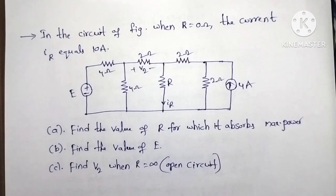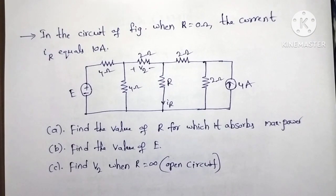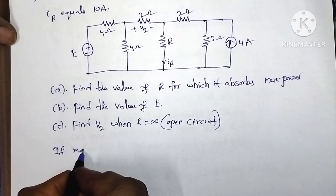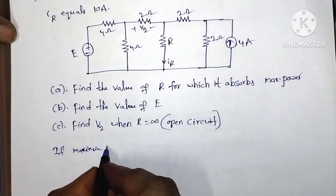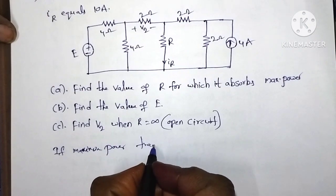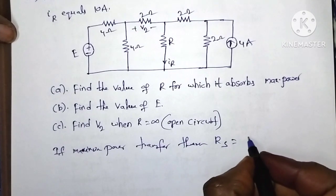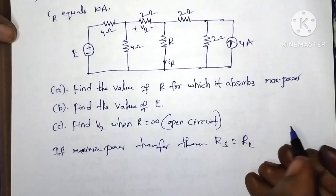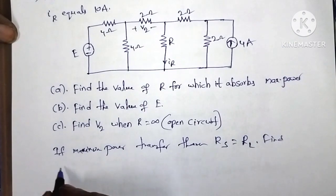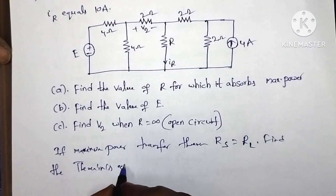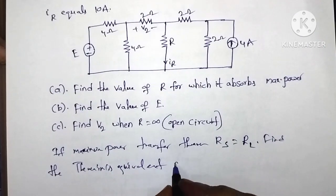First, let's understand the maximum power transfer theorem. The maximum power transfer theorem states: if maximum power transfers, the source resistance is equal to the load resistance. Then we need to find the Thevenin's equivalent circuit.